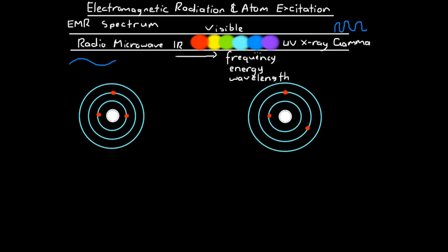Similarly, if we go from left to right, the energy increases. So gamma ray waves have more energy than radio waves. Similarly, purple light has more energy than red light, and that's going to become very important as we start analyzing atoms. Now, lastly, wavelength increases in the opposite direction. So radio waves have a bigger wavelength than gamma ray waves. That's kind of the idea behind how the electromagnetic spectrum operates.